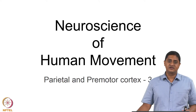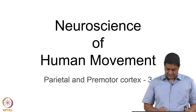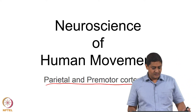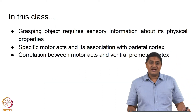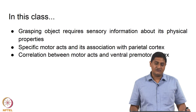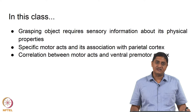Welcome to this class on Neuroscience of Human Movement. In this class we will discuss Parietal and Premotor Cortex. This is part 3 of our discussion on this topic. In the last class we saw that specific regions of the Parietal and Premotor Cortex are responsible for generating movement plans concerning reaching and grasping.